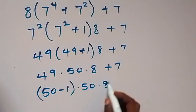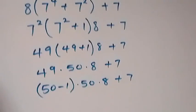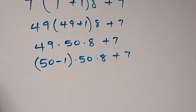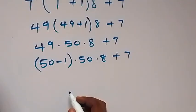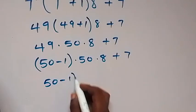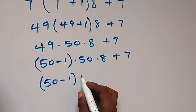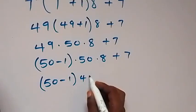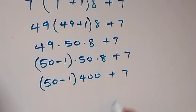Times 8, plus 7. And 50 times 8 is the same as 400. So we have 50 minus 1, then times 400, plus 7.